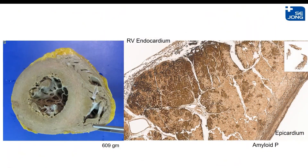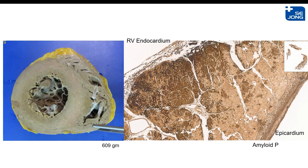This is the macroscopic view of the specimen showing marked thickening. The histologic view on the right side uses amyloid P component staining, which is the easiest way to diagnose amyloidosis regardless of type. The amyloid deposit is more concentrated on the endocardial side of the ventricular wall compared to the epicardial side.